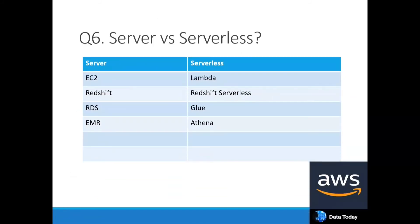A very important question is: what is the difference between server and serverless? Server-based means you create a cluster, instance, or virtual machine. Serverless means the server is managed by AWS — they provide the infrastructure, you get an interface to write code and get output without worrying about configuration. Server-based services include EC2 (instances), Redshift (data warehousing), RDS (database cluster with backup), and EMR (cluster computing with Spark or other distributed engines).